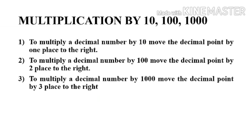Next is multiplication by 10, 100, and 1000. To multiply a decimal number by 10, move the decimal point one place to the right. To multiply by 100, move the decimal point two places to the right. To multiply by 1000, move the decimal point three places to the right. Now let's do some problems.